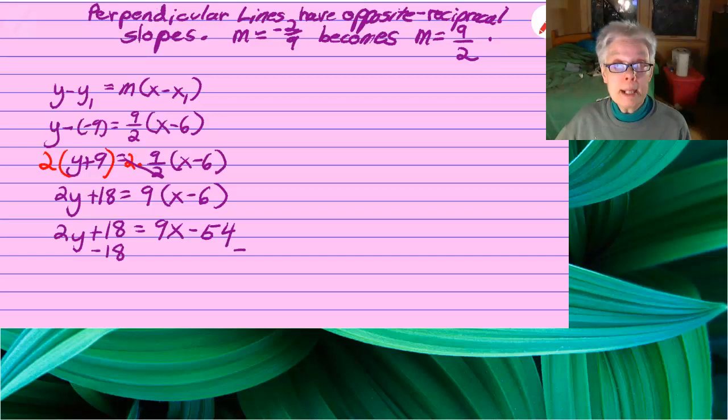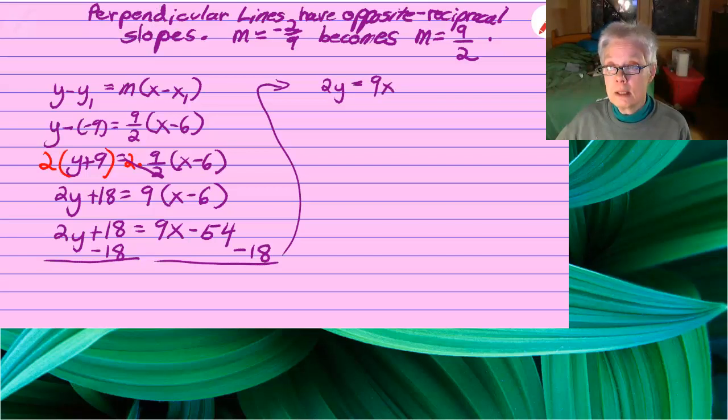Subtract 18 from both sides. And we'll have 2y equals 9x minus 72.